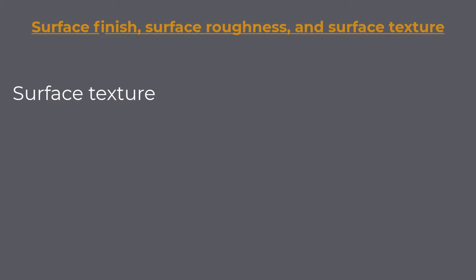Surface texture can be broken down into three main components: waviness — larger scale, more spaced-out irregularities; roughness — finer, closely spaced irregularities; and flaws — defects or unintended deviations like scratches or pits. The surface texture is often represented using profile traces, which are graphical representations of the surface's deviations across a specified length.